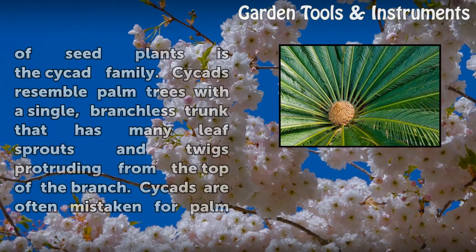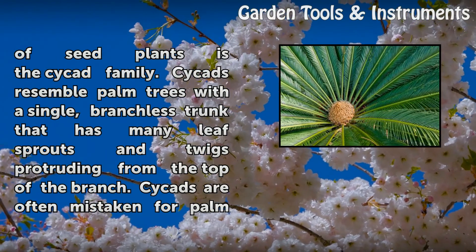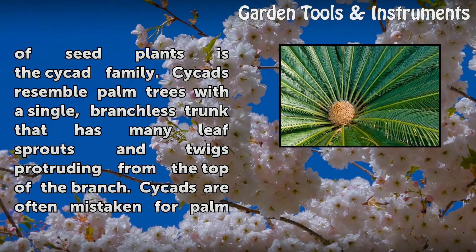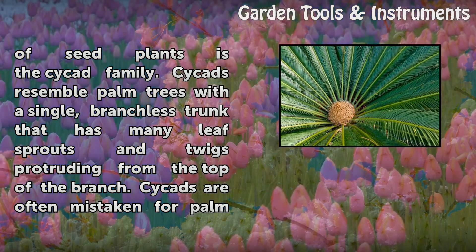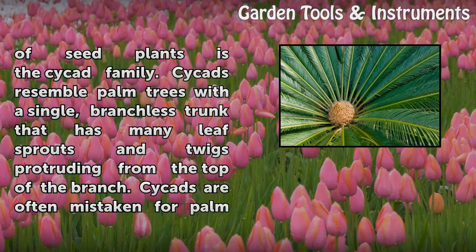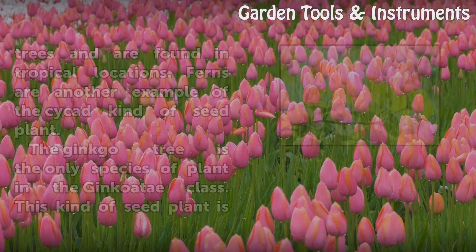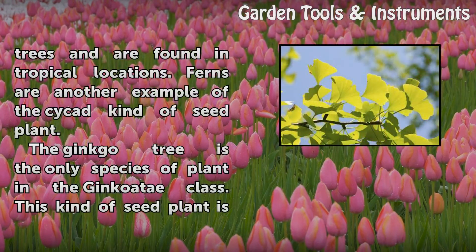One of the oldest kinds of seed plants is the cycad family. Cycads resemble palm trees with a single branchless trunk that has many leaf sprouts and twigs protruding from the top. Cycads are often mistaken for palm trees and are found in tropical locations. Ferns are another example of the cycad kind of seed plant.